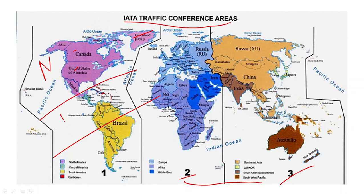In Mid Atlantic, you will find different Caribbean countries, Panama Canal, and also South American countries like Peru. South Atlantic has Brazil, Argentina, Paraguay, Uruguay, and Chile. So these are the three sub-areas of TC1.